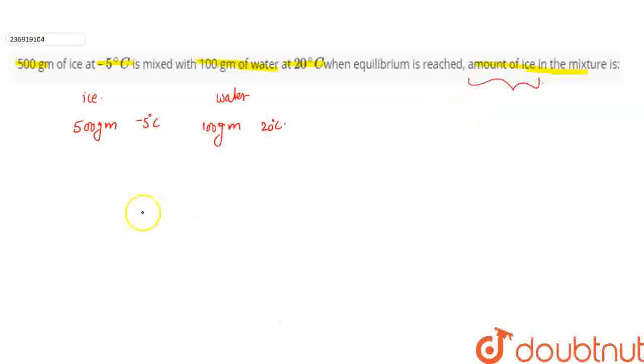How do you do this question? Ice, I have half a kilo at minus 5 degrees and water is 100 grams at 20 degrees Celsius.